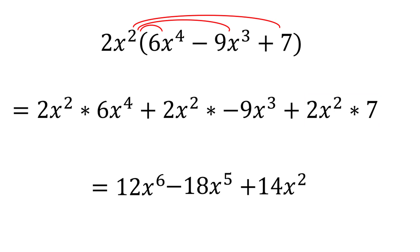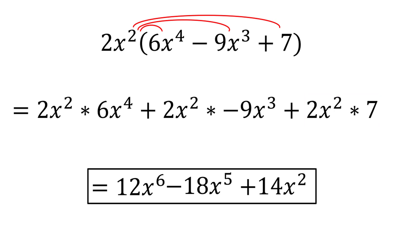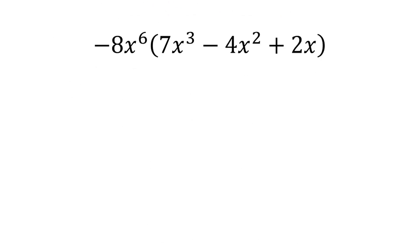Altogether, we have 12x to the sixth minus 18x to the fifth plus 14x squared. Let's try another one.